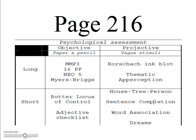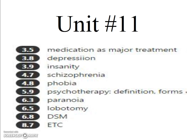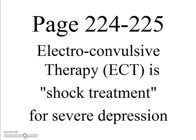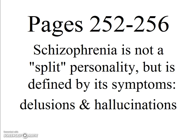You can see the different types of personality tests, such as the Rorschach, which is very projective, not necessarily very valid or reliable. In Unit 11, students want to know more about ECT — electroconvulsive therapy. This is shock treatment for severe depression.